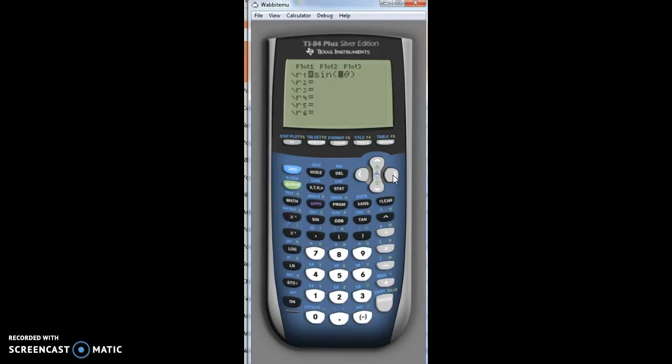If I change it so that the coefficient is even, I'm going to have twice as many petals. So when the coefficient is 3, I have 3 petals, and when the coefficient is 4, I have 8 petals.